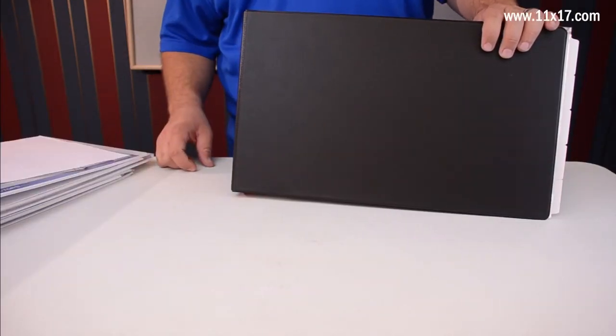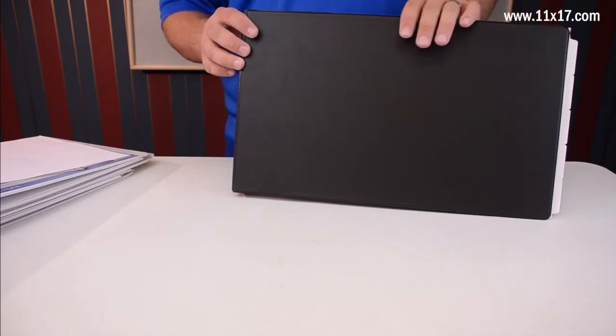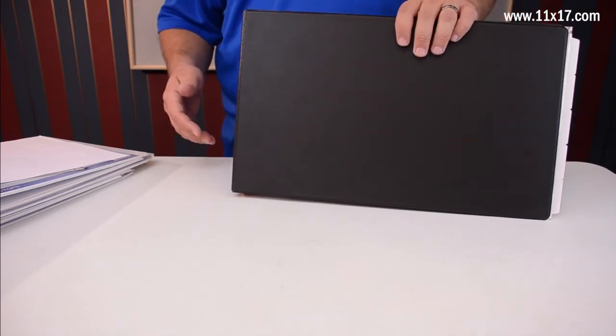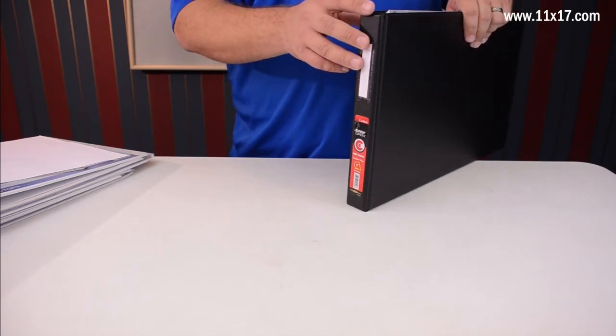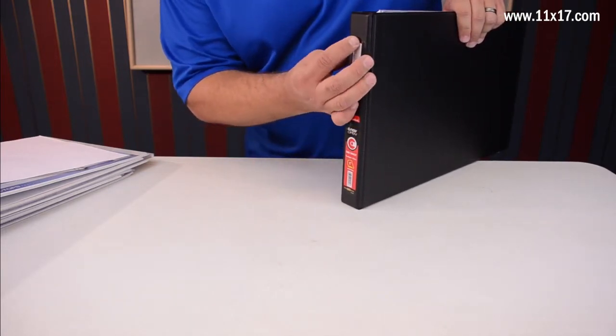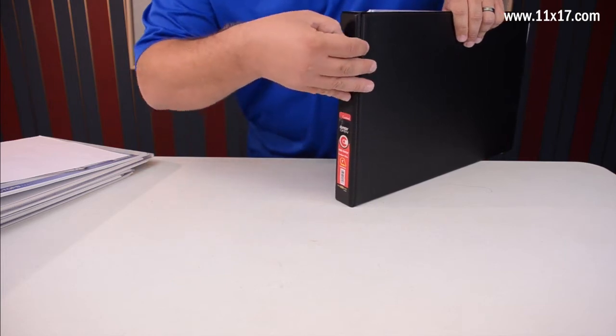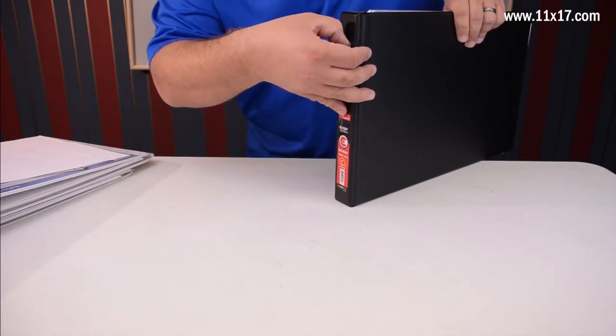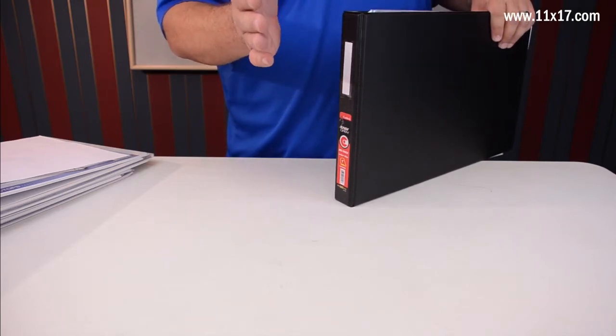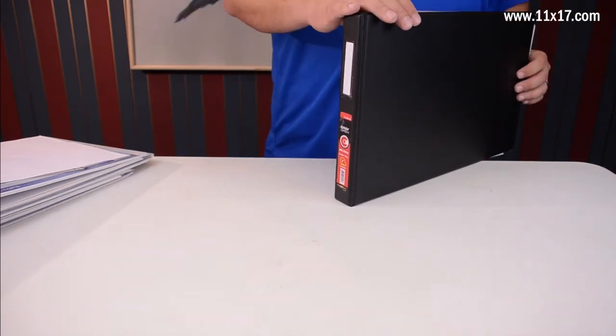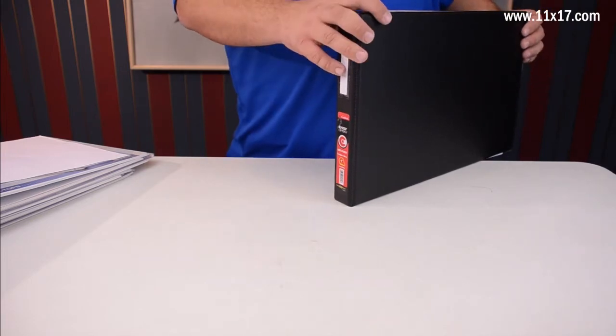So now we're looking at the Cardinal one-inch vinyl binder. Key features of this product include this little spine label system right here. It's pretty tricky to get out—I don't even want to mess with it right now. Essentially you whip out your pocket knife and get that thing out. It's not really a great idea, but it does allow you to label the spine so when it's sitting on the shelf, you can identify the contents of the binder.